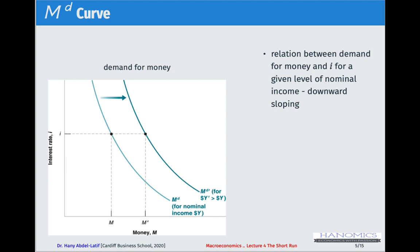Graphically, we put money on the horizontal axis and the interest rate on the vertical axis. The relationship between demand for money and interest rate is negative, so the demand for money curve Md is downward sloping. Moving along the curve represents changes in the interest rate for a given level of nominal income.